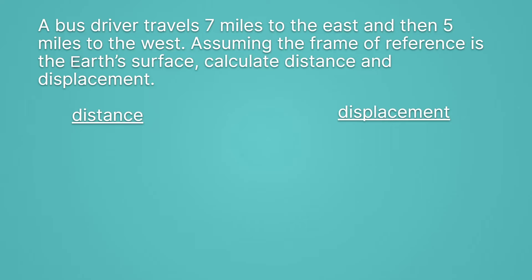What is distance? Remember it's the total length traveled so all we have to do is take our seven miles, that was the first leg of the trip, and add it to our five miles, the second leg of the trip. So the total distance traveled is 12 miles.